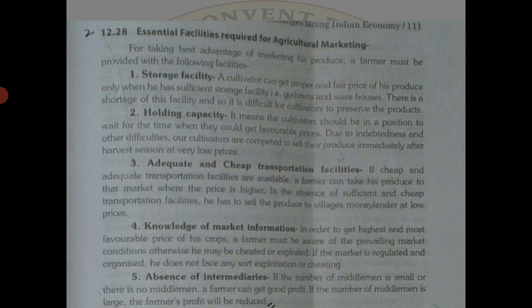The second is holding capacity. When a crop is produced, peasants are not in a state to hold that crop for a longer time because they need money for repaying debts and cannot wait for favorable prices. So they are in a state of indebtedness and have to sell their crop at very low prices.